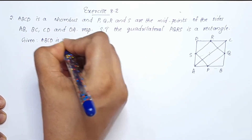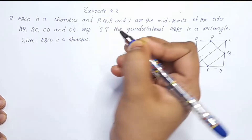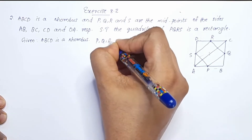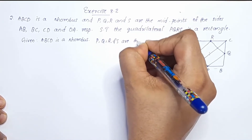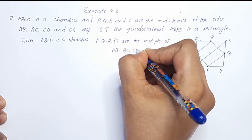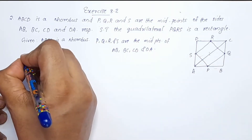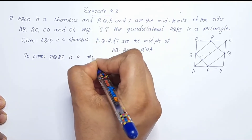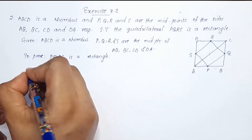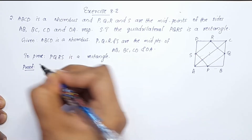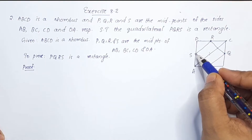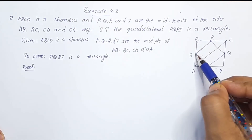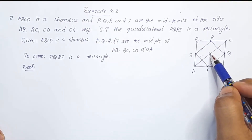The midpoints of ABCD — where ABCD is a rhombus — P, Q, R and S are the midpoints of AB, BC, CD and DA. We are given to prove that PQRS is a rectangle. The diagonal of the rhombus serves as the middle line.